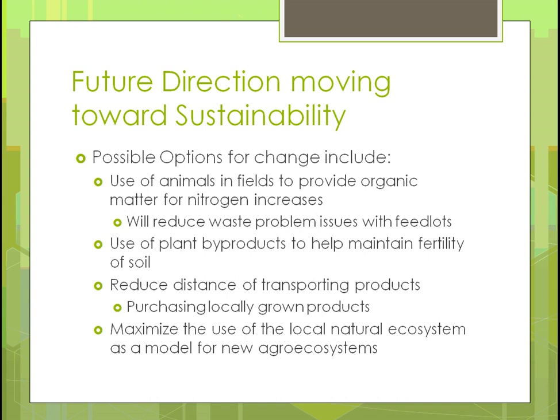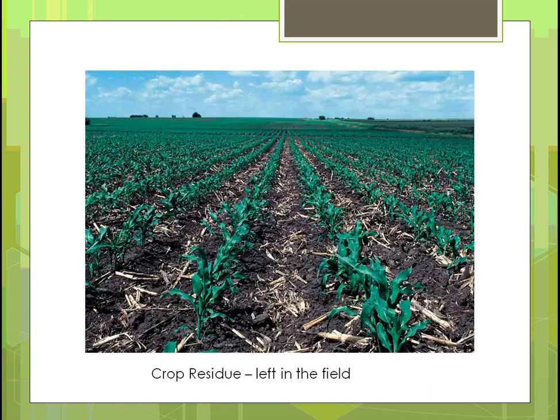We can use plant byproducts to help maintain soil fertility by leaving more crop residue after harvest. Reducing transportation distances — buying locally — maximizes use of the local ecosystem. Here's an example of crop residue left in a field where corn is coming up alongside old corn stalks from the previous year — not totally sustainable, but a step in the right direction.